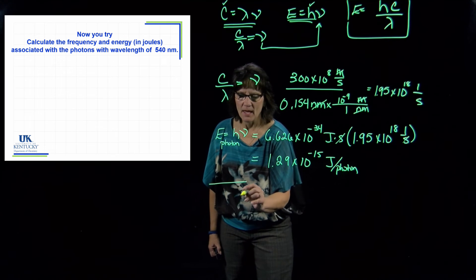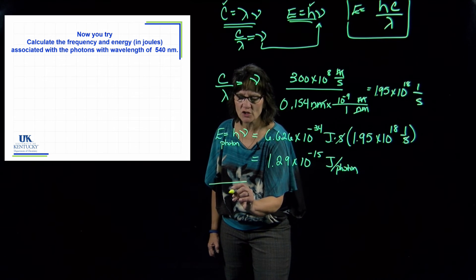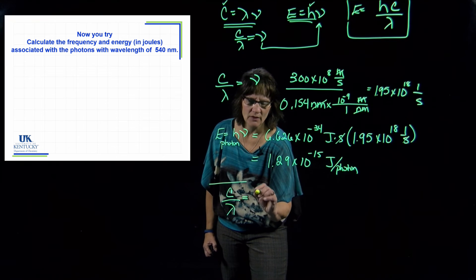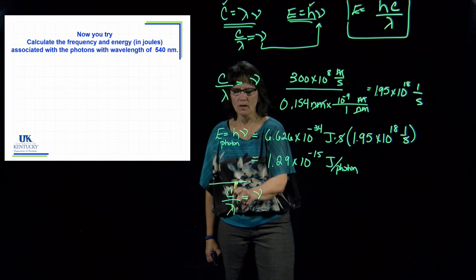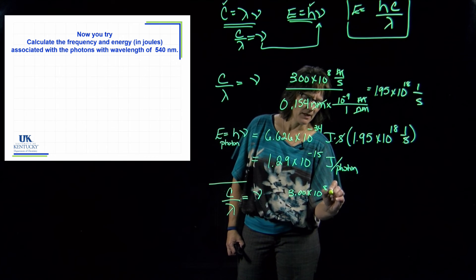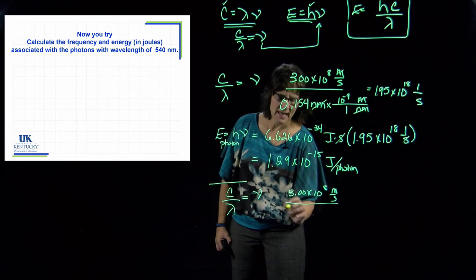Now we're trying to figure out the frequency—that's the one I want to get first—because c over lambda gives me the frequency. C is 3 times 10 to the eighth meters per second, wavelength they gave it to me in nanometers.